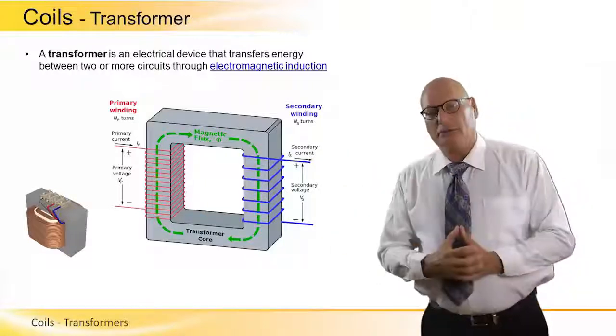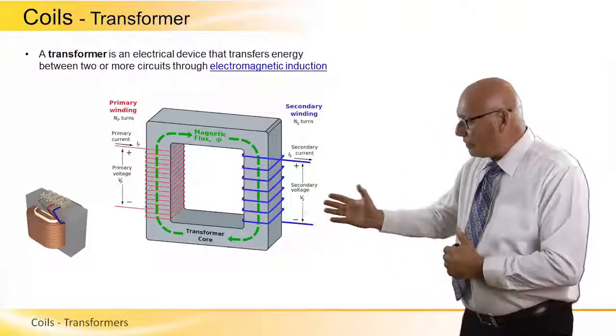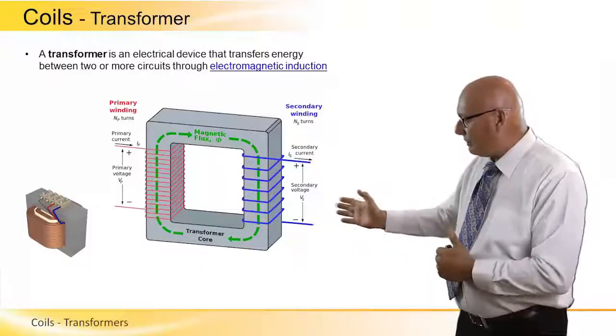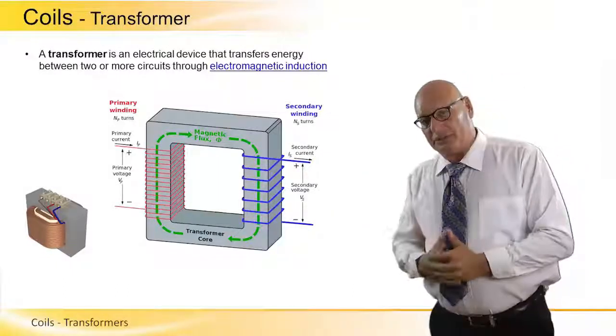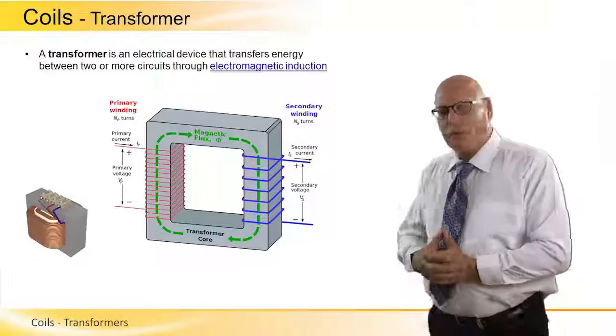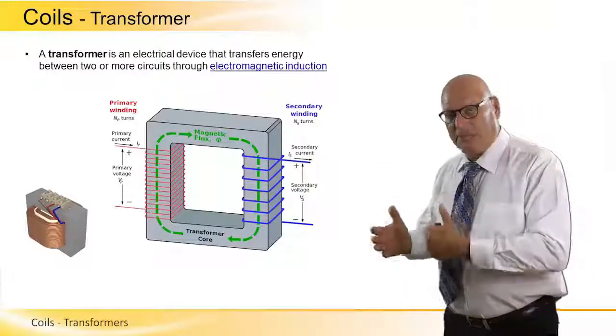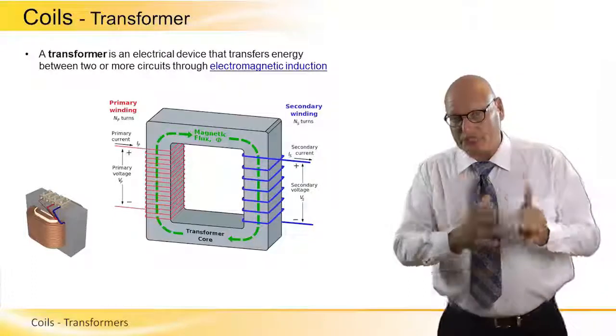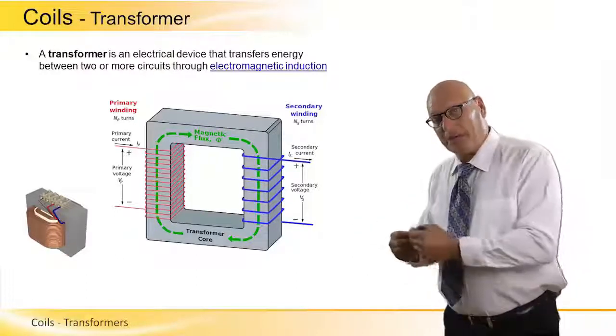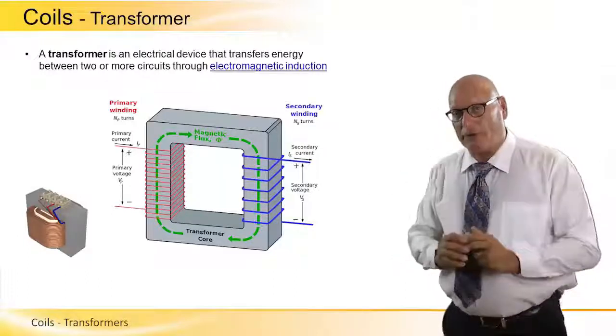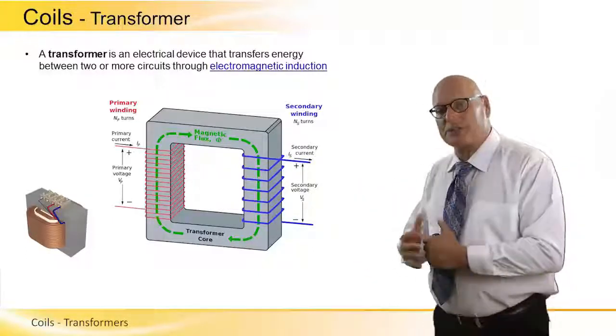We have a core. In this core, we have two coils. On the left, we have a primary coil, and on the right, we have a secondary coil. Primary winding has N number of turns and a secondary winding has N number of turns. They don't have to be the same. There are types of transformers where the number of turns in the primary will be equal to the number of turns of the secondary in order to do just isolation.